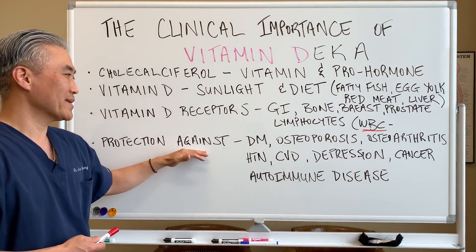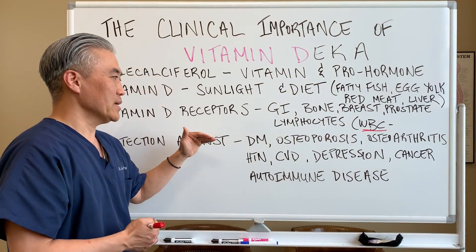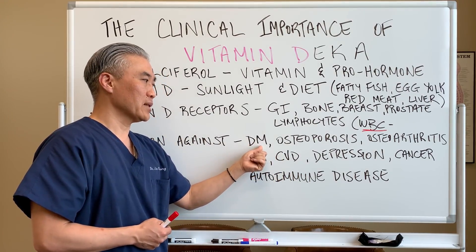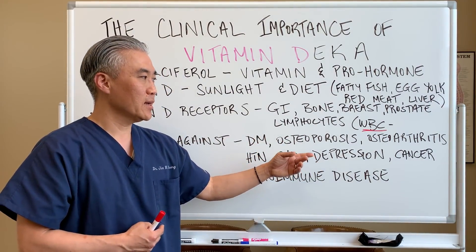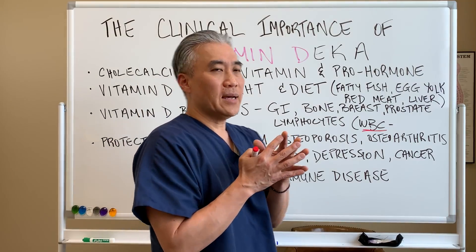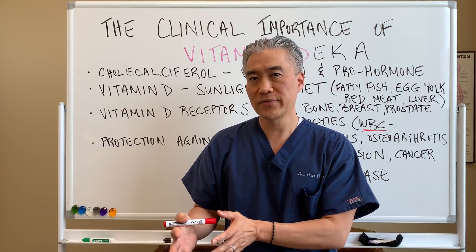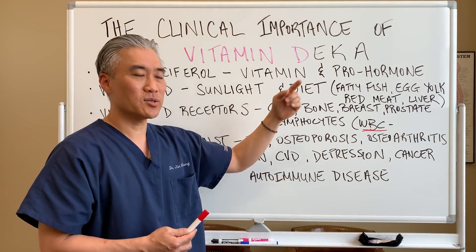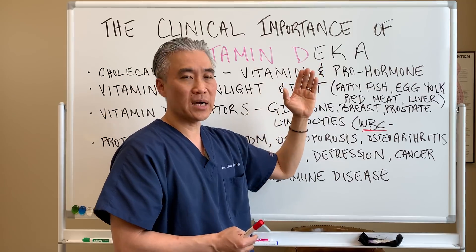You need vitamin D to help prevent things like diabetes mellitus, osteoporosis, osteoarthritis, hypertension, cardiovascular disease, depression, cancer, and autoimmune disease. It has a very global effect, so taking one nutrient could be quite beneficial to the overall health of the individual. Most fat-soluble vitamins work synergistically, and there are companies that produce all of these in combination, but we're talking about just vitamin D today.